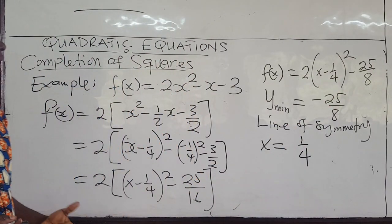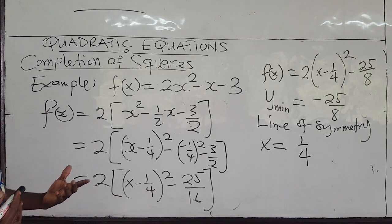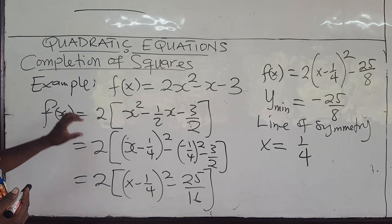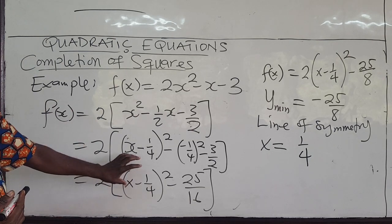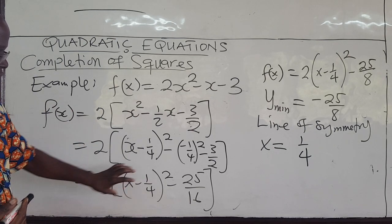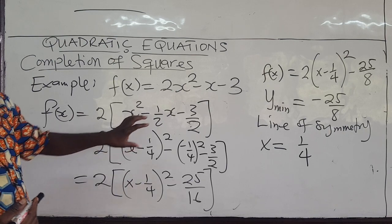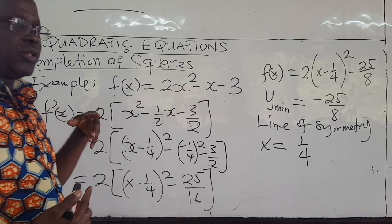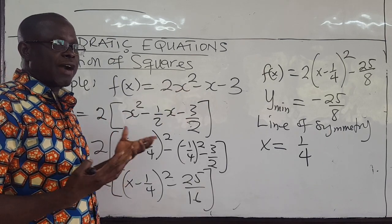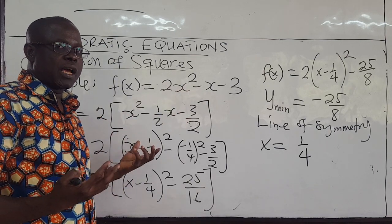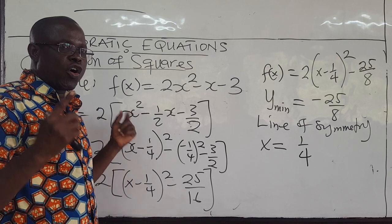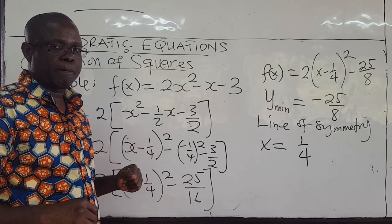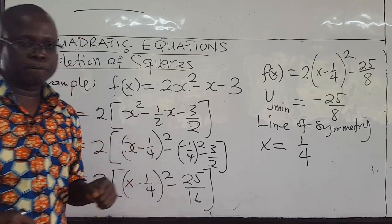Next, we'll look at using this completed square expression to derive the formula — the so-called almighty formula — for solving quadratic equations.